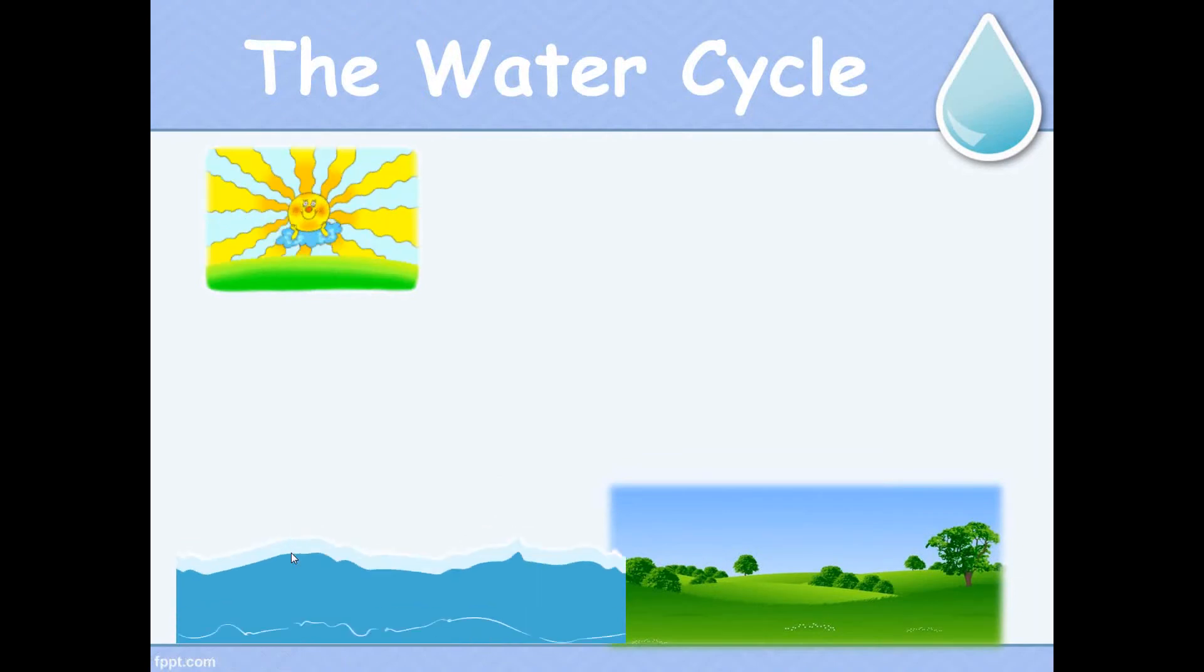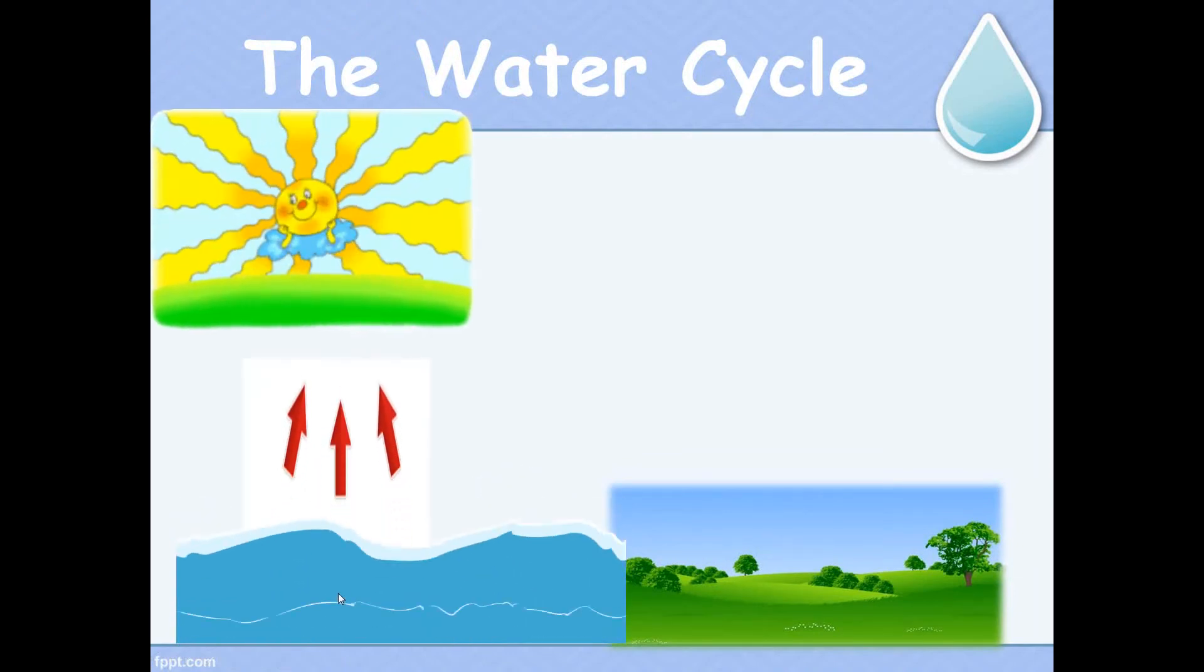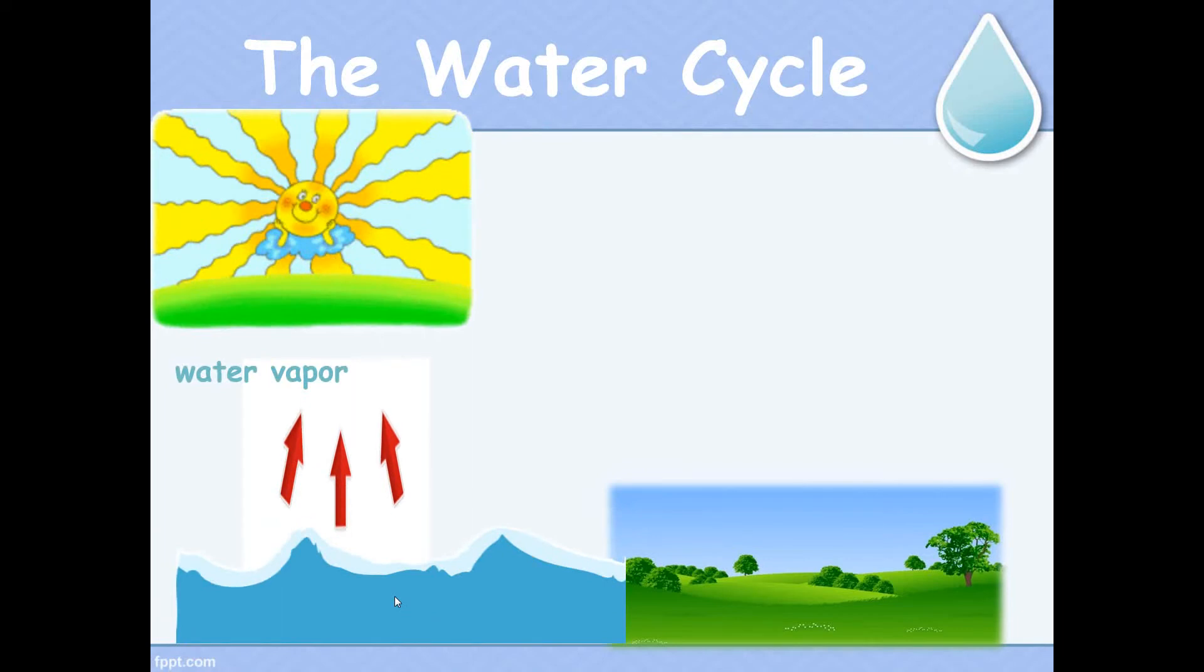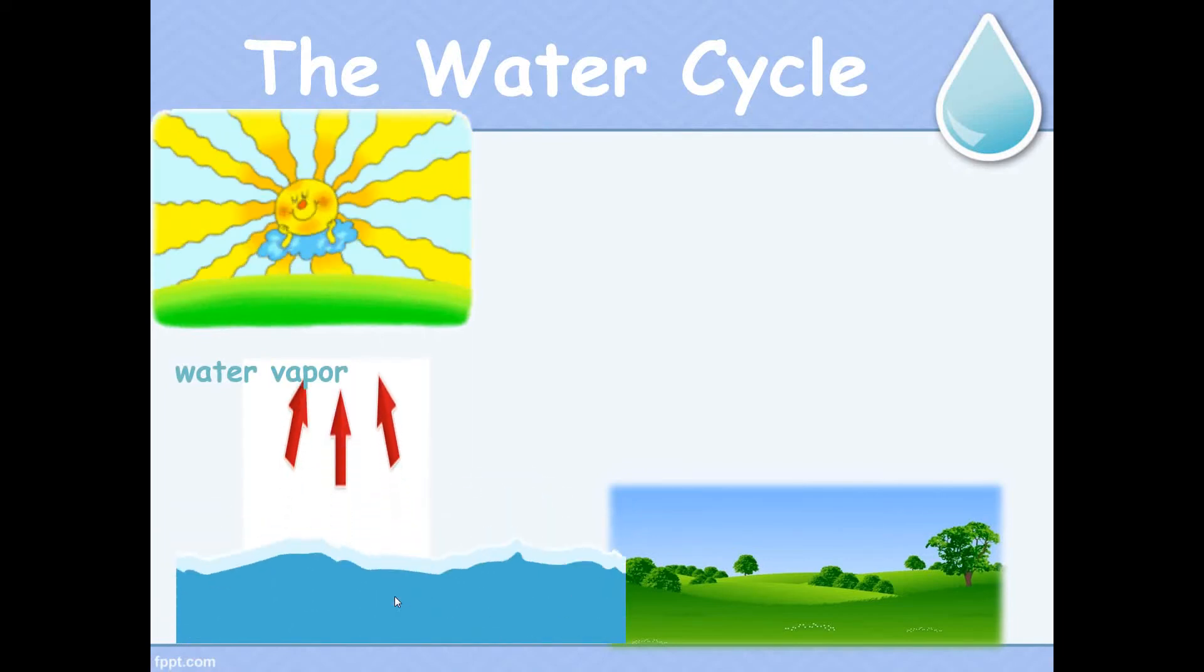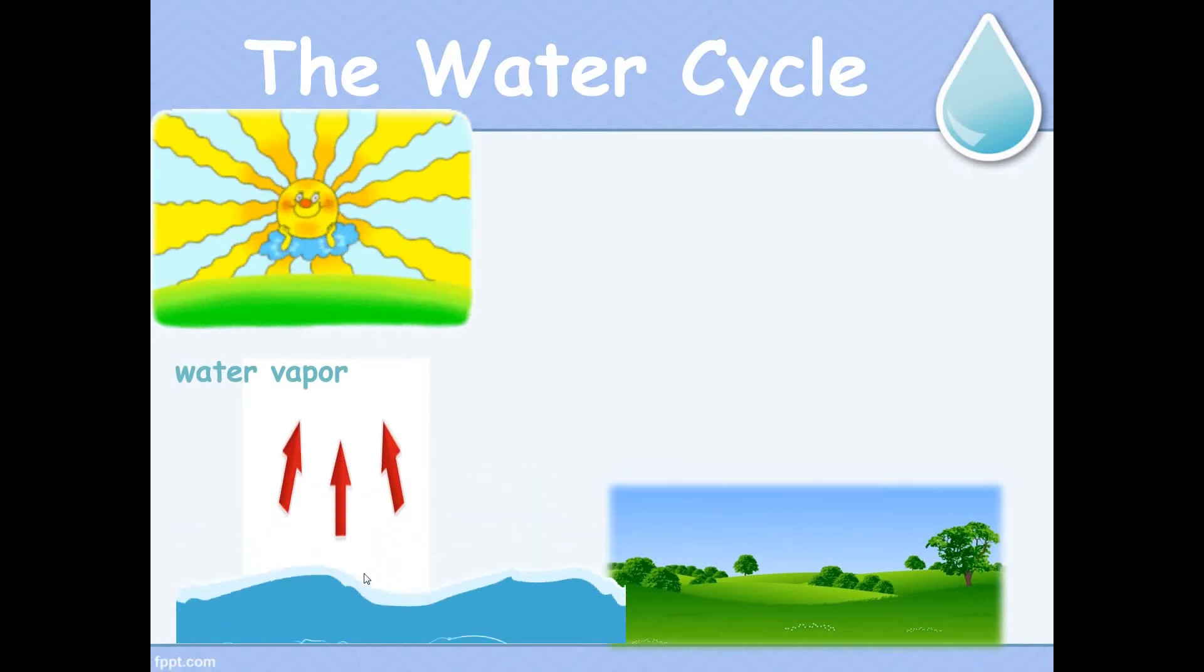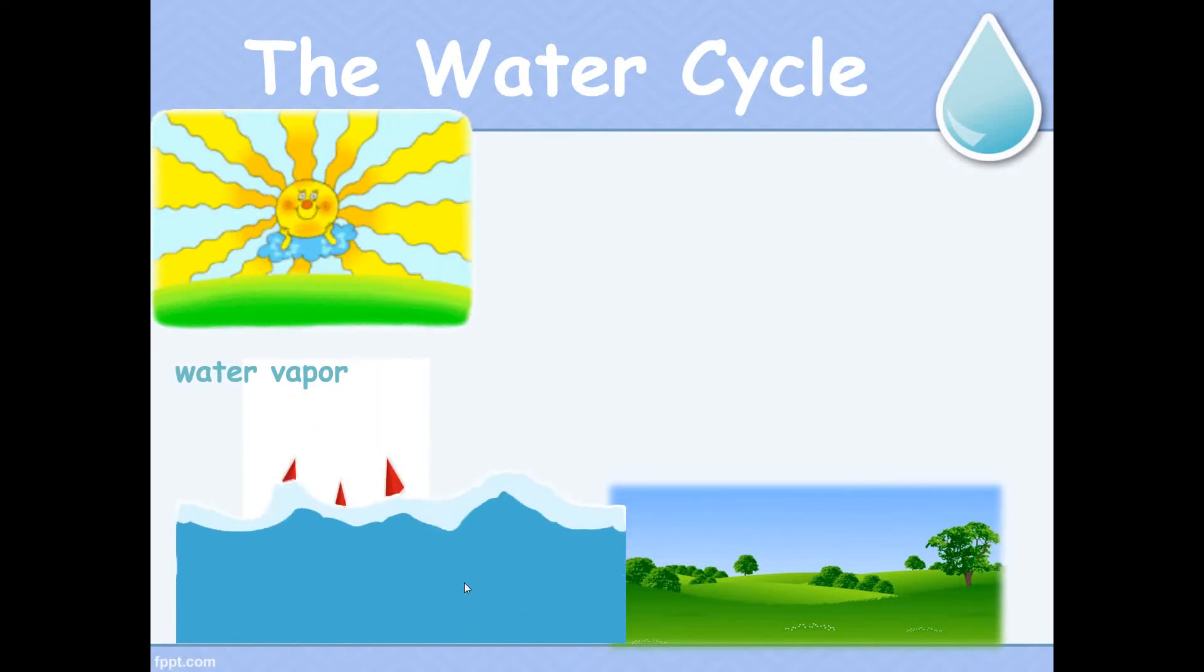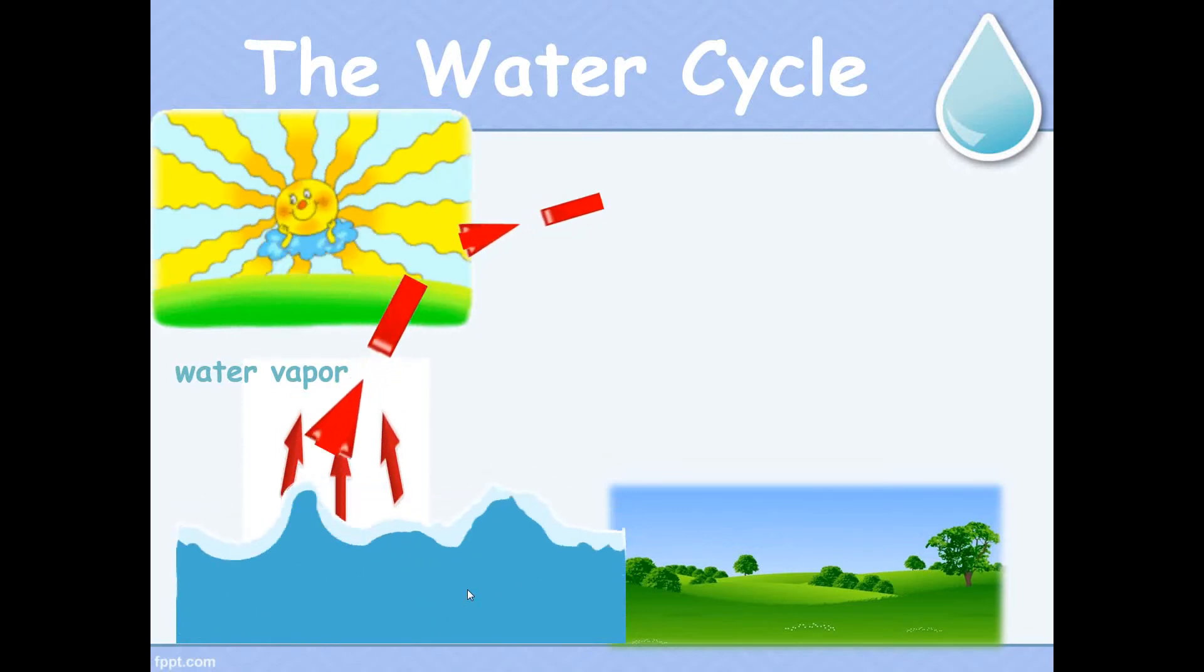You know that the sun warms the land, air and water. When the sun warms water, some water starts to change and moves up. It turns into water vapor. What is the meaning of water vapor? Water vapor is water that goes up in the air.